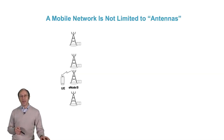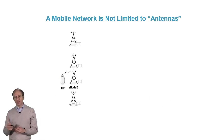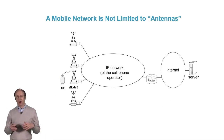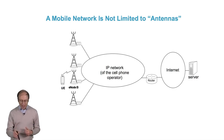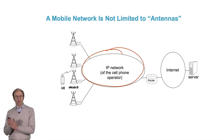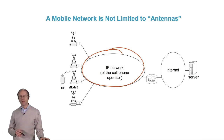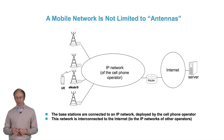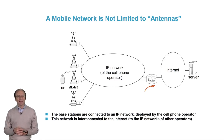A mobile network isn't limited to antennas — it's a group of base stations spread out over a territory. The base stations are connected to an IP network deployed by the cell phone operator. This network is interconnected to the internet and to the IP networks of other operators via one or several routers. We'll get into the details in other videos.